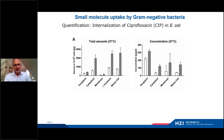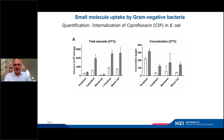The gray bars are the delta-tolC strain and the white bars are the wild-type strain. However, if you now convert to concentrations, the relative height of the bars looks different. Indeed, the highest concentration of ciprofloxacin resides in the periplasm and not in the cytoplasm, because the periplasm is smaller. So it is worth having a look at both amounts and concentrations.